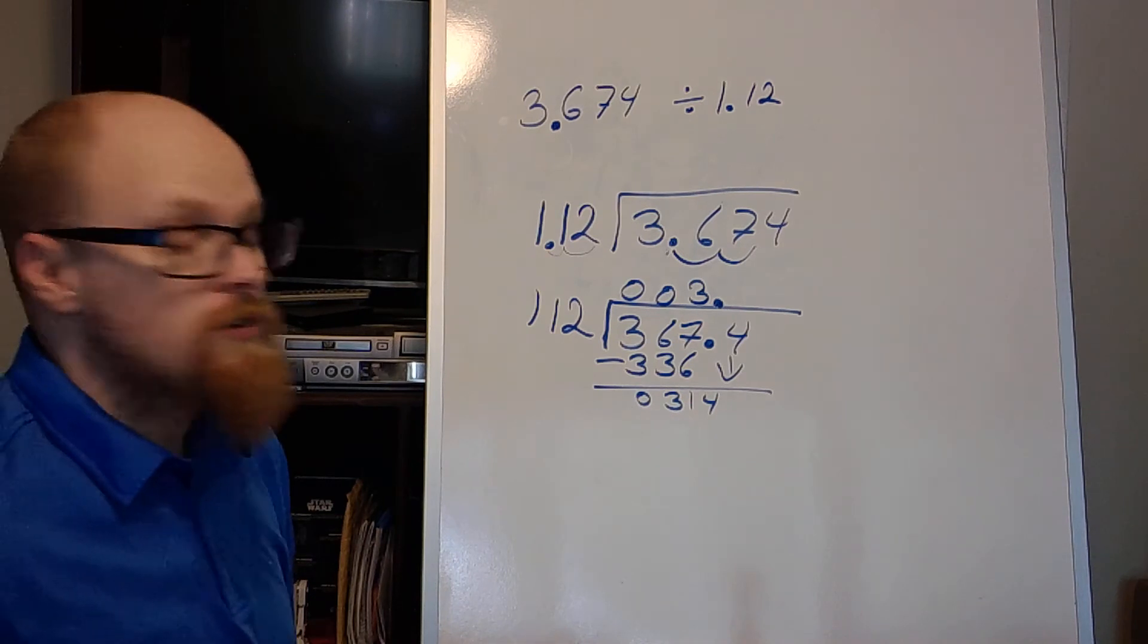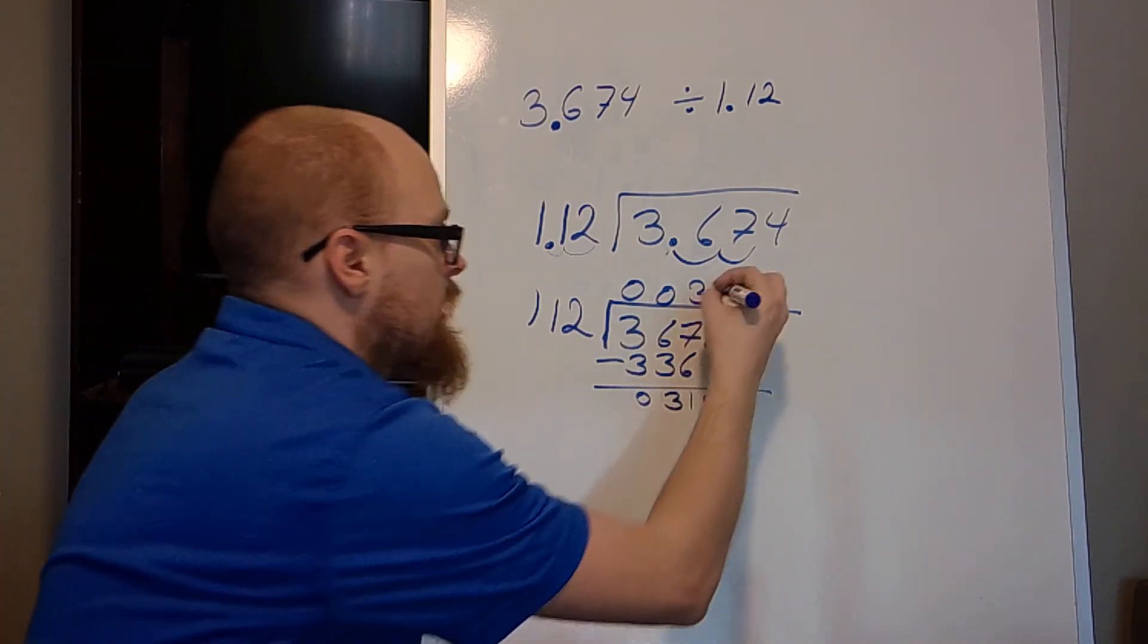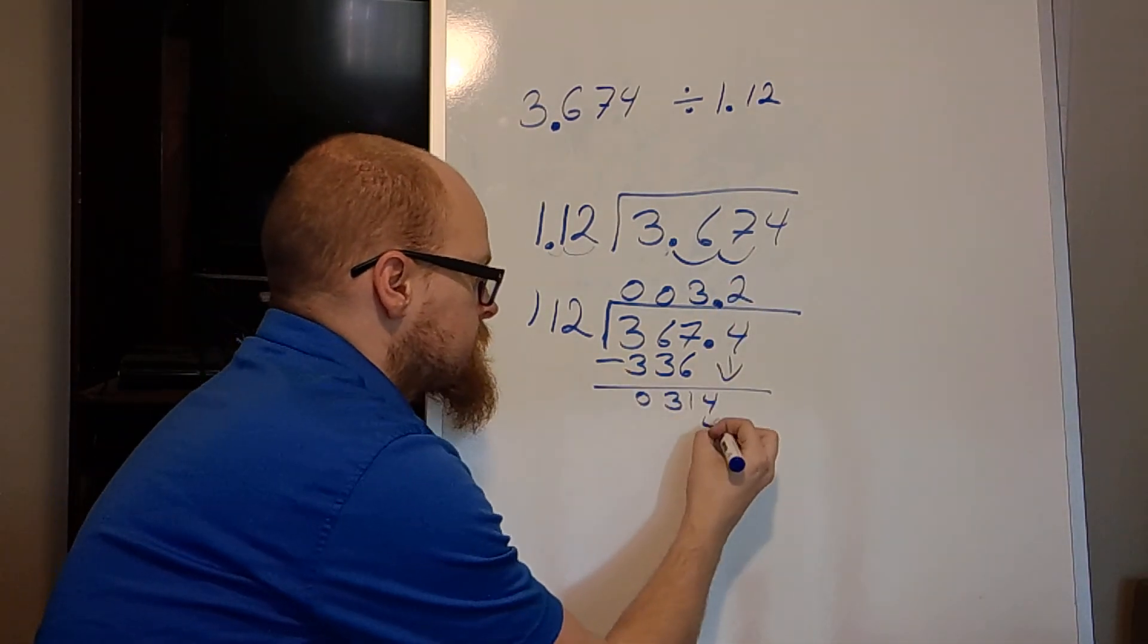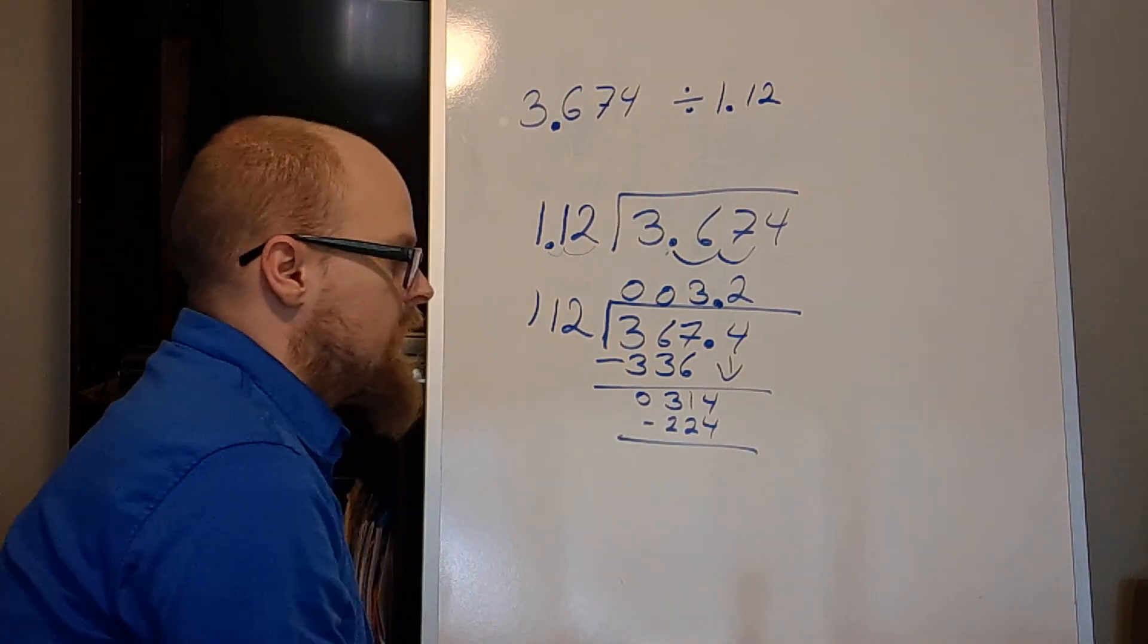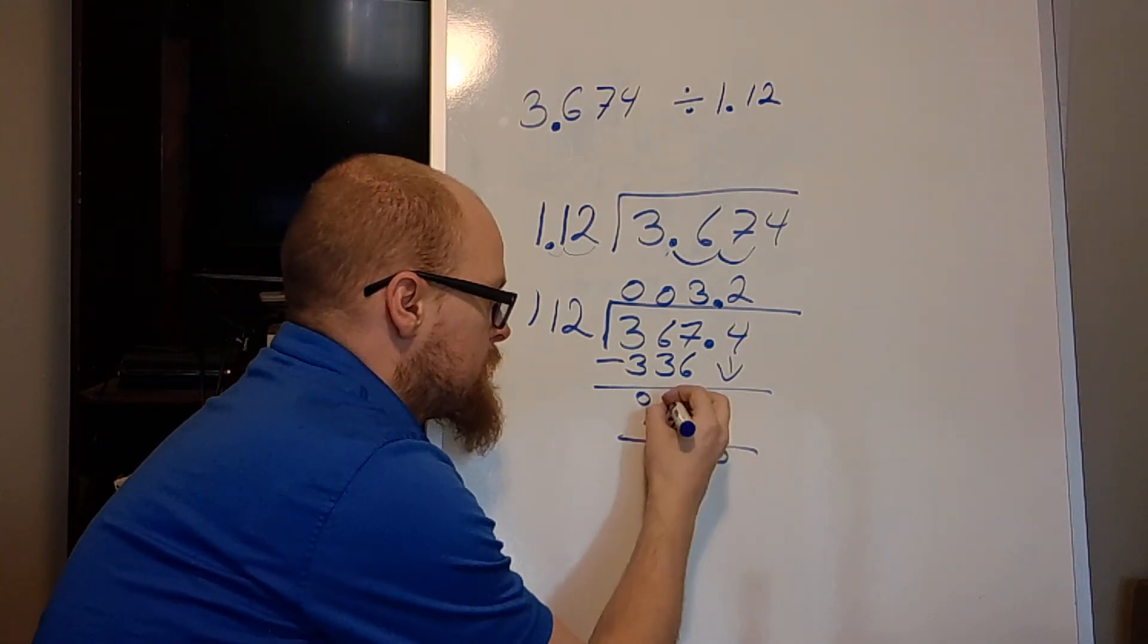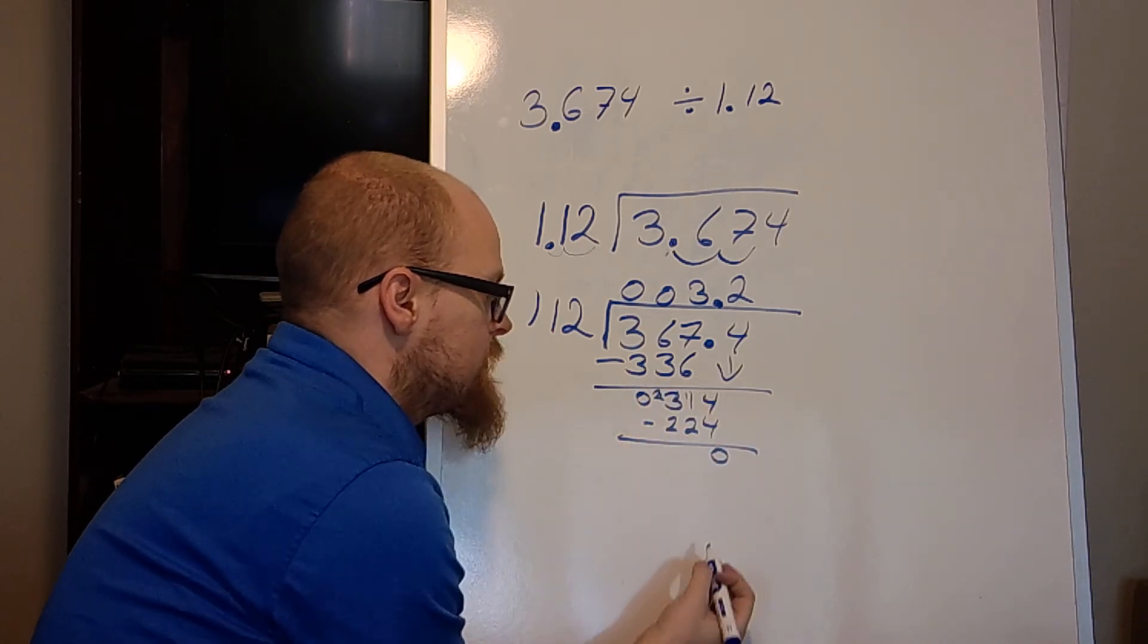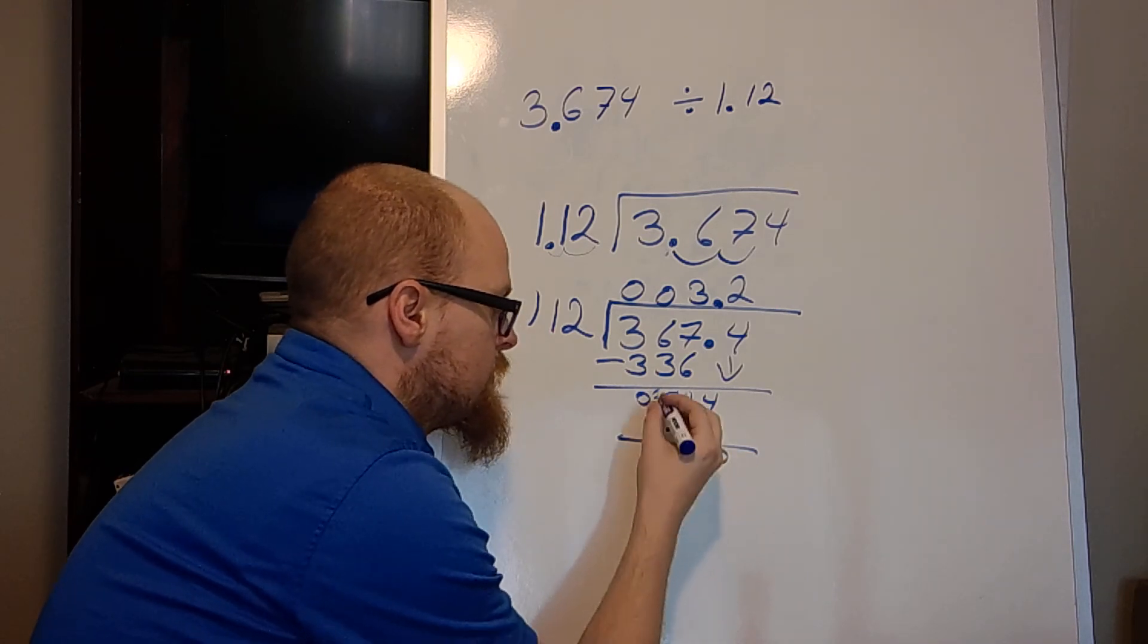I have to go into 314. I know 336 is too big. So three won't work. So let's try a two instead. It's going to be four, two, two. I do my normal subtraction. I have to borrow for this one. It's at 11. So 11 minus two is nine. Two minus two is zero.